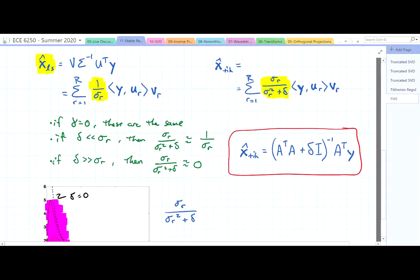So first thing to notice is if delta is equal to 0, these are identical. If delta is much less than sigma_r, then the Tikhonov expression terms approximate 1 over sigma_r, which is the least squares term. And if delta is much larger than sigma_r, then this expression goes to 0.